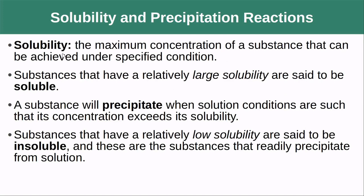The reason is that they have differing solubilities. Solubility is a property — it's the maximum concentration of a substance that can be achieved under specific conditions. Substances with relatively large solubility are said to be soluble, and a substance will precipitate when its concentration exceeds its solubility. If a substance has relatively low solubility it is said to be insoluble, and these are the ones that will typically readily precipitate out of solution.